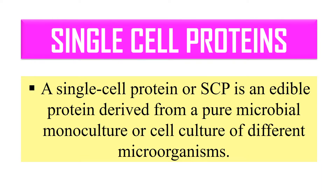A single cell protein, or SCP, is an edible protein derived from a pure microbial monoculture or sometimes the cell culture of different microorganisms. In simple words, single cell proteins are the microbes which you eat for the purpose of getting proteins from them — either a single type of microorganism or sometimes different microorganisms eaten for obtaining proteins.